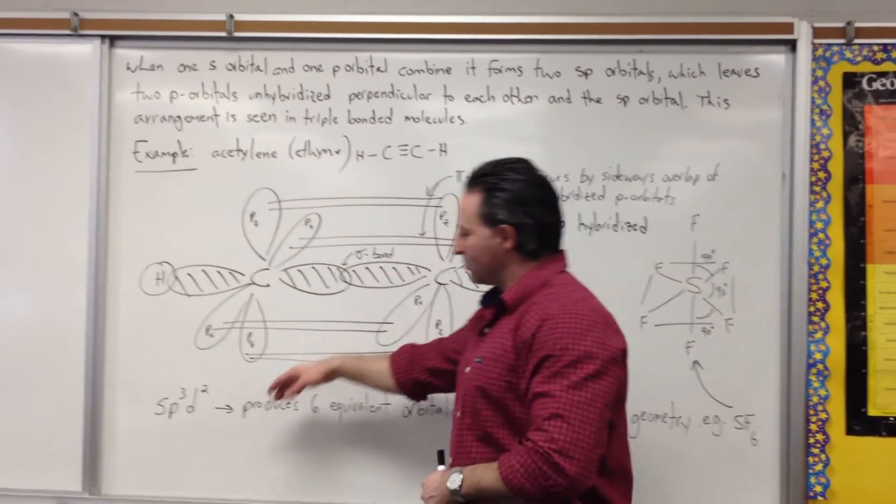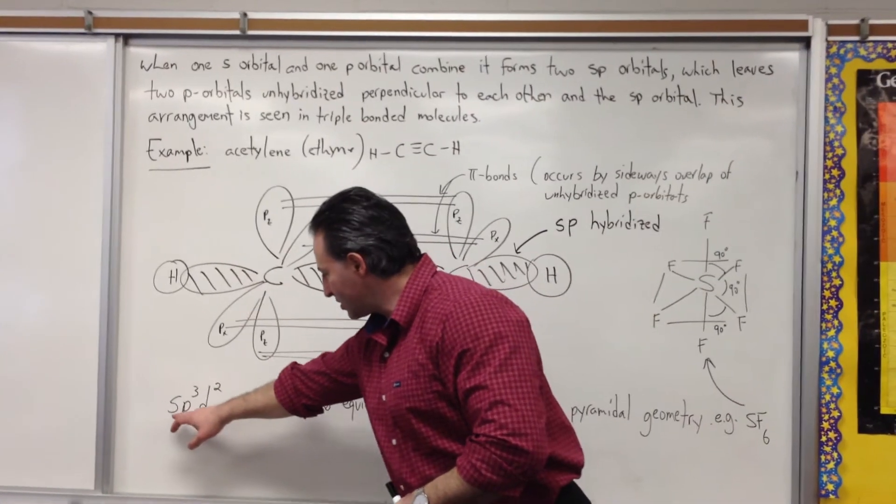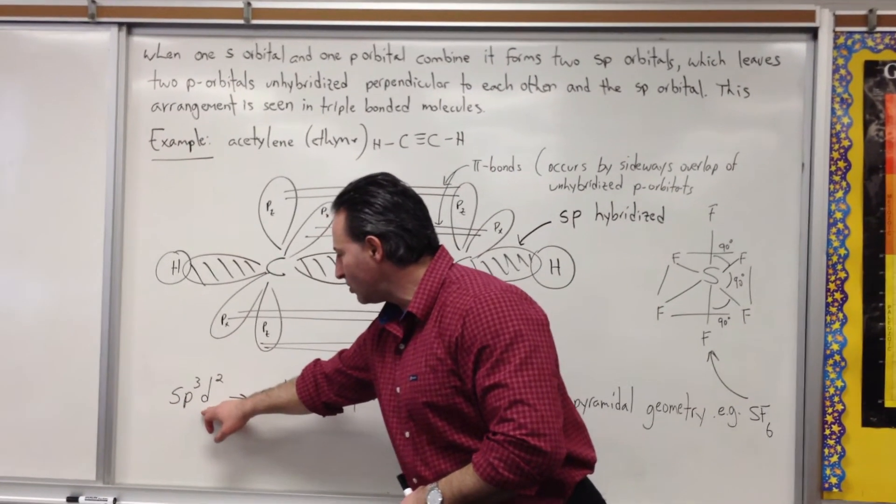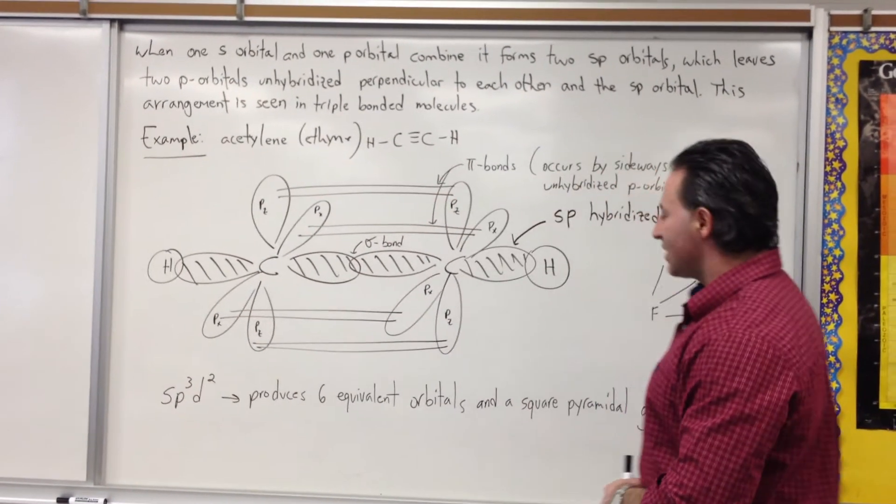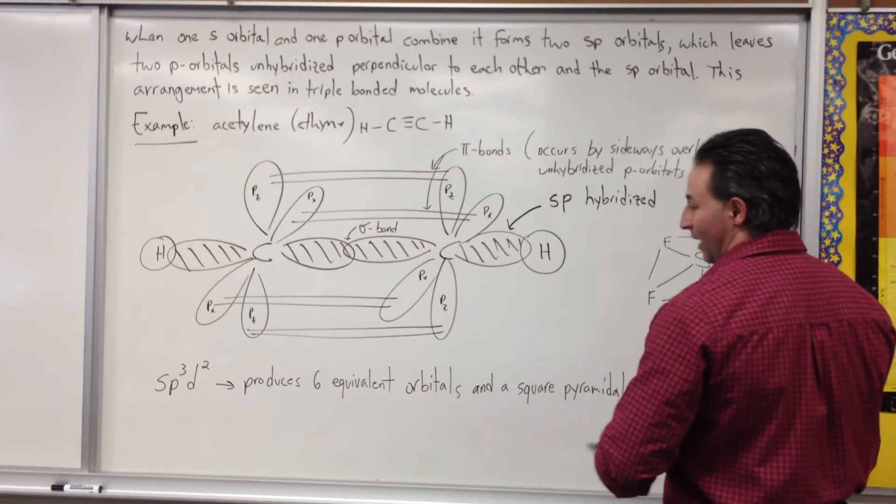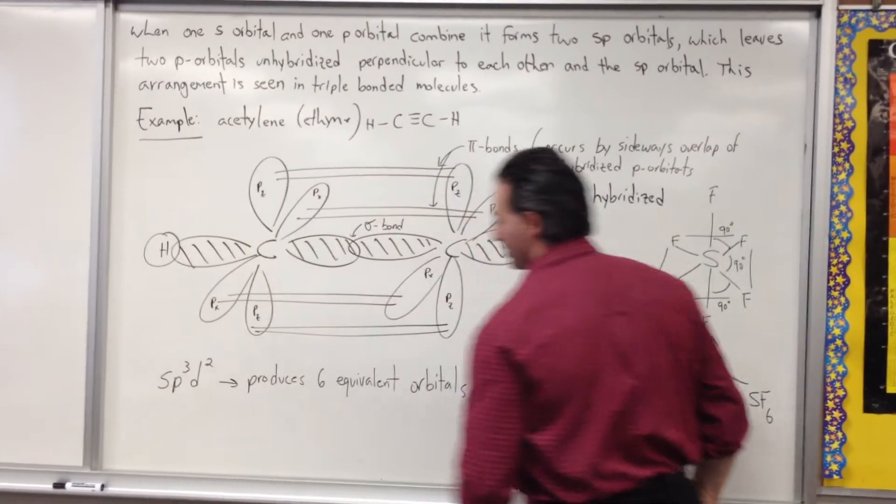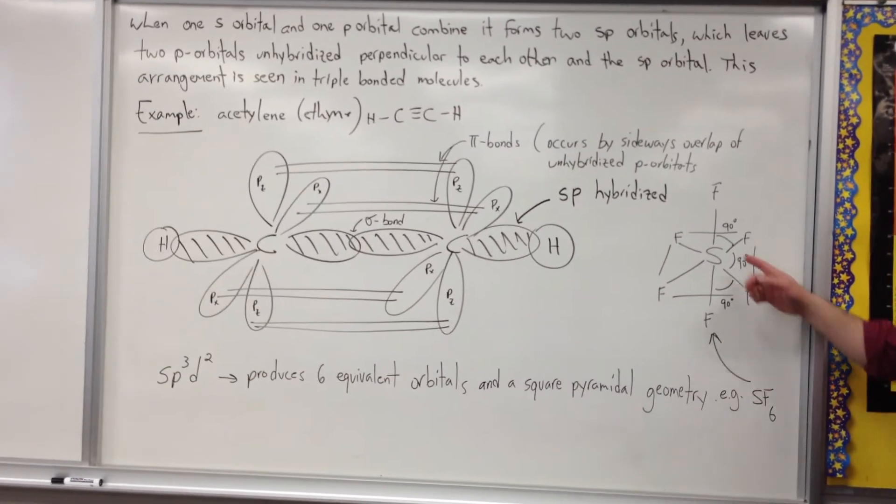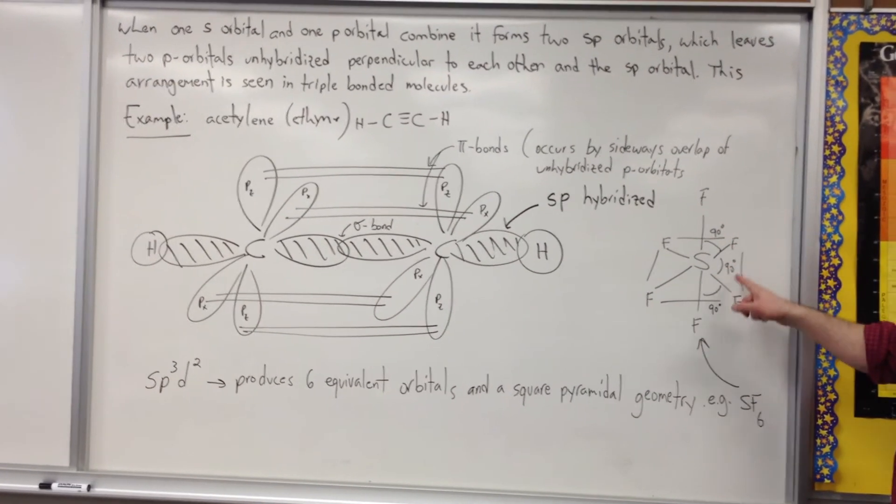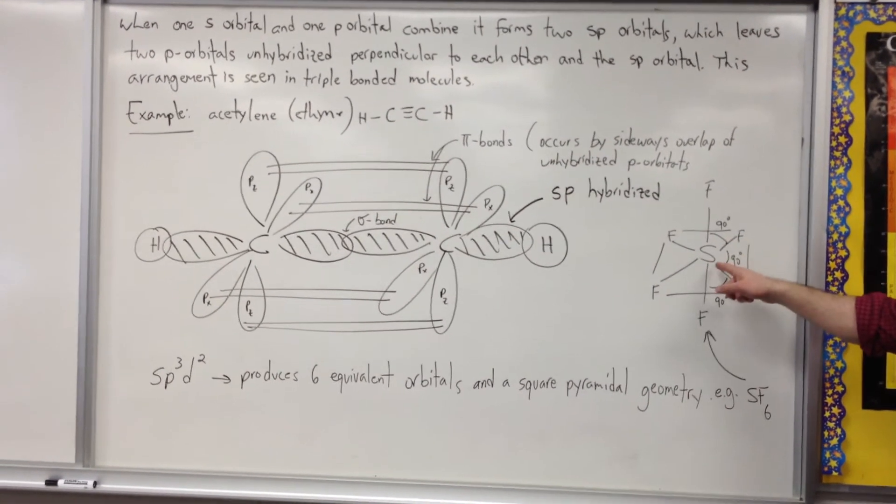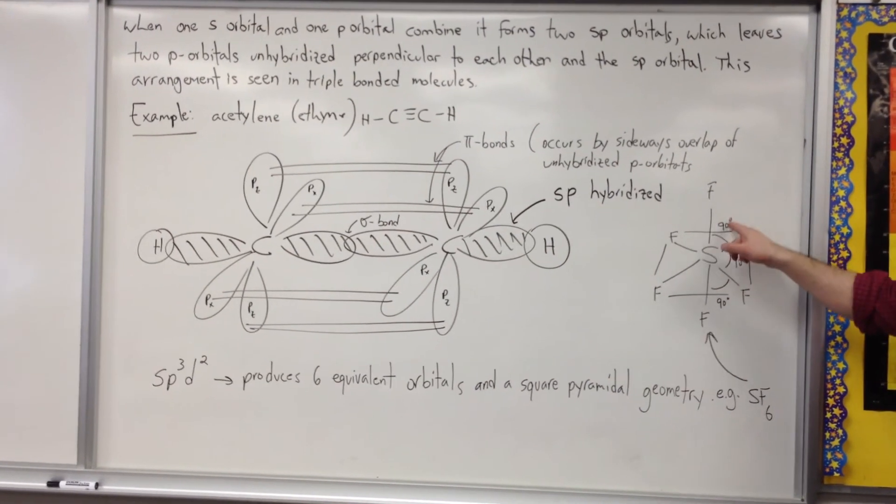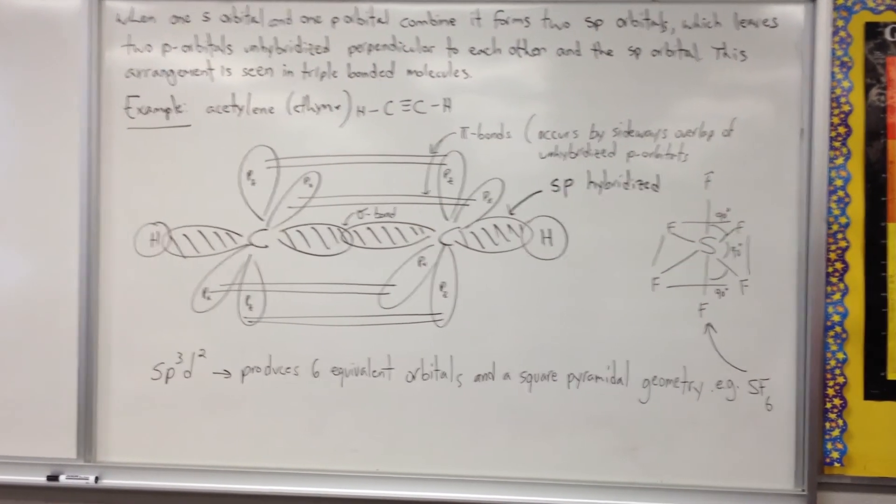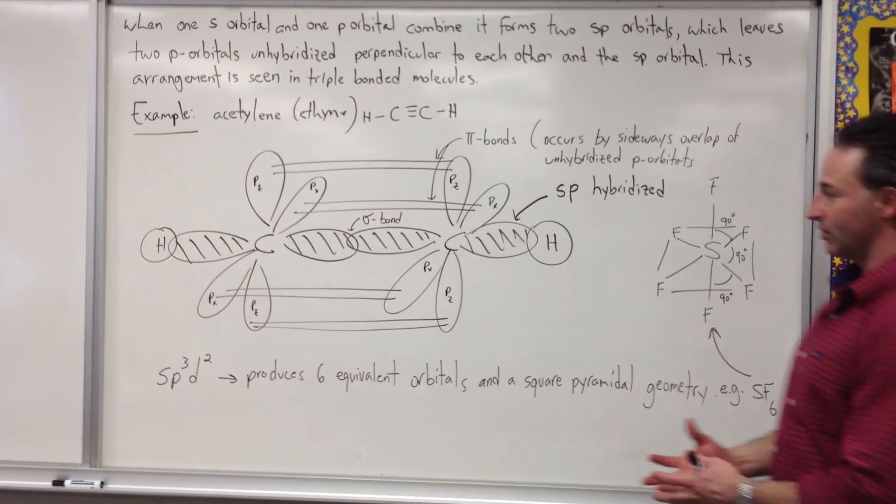In further hybridization possibilities, you get sp3d2, which creates six equivalent orbitals by hybridizing all three of these types of orbitals. And you see that kind of a geometry in sulfur hexafluoride, where all the bond angles are 90 degrees. You have six things stuck on a central atom, and all the angles are 90 degrees, because the orbitals are equivalent in energy.